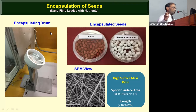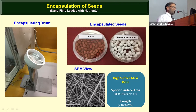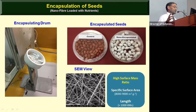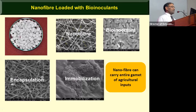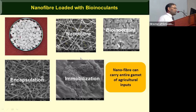The beauty of nano-fiber technology is that one gram of nano-fiber has a surface area of roughly 10,000 square meters — equivalent to one hectare of land loaded onto a seed. In terms of length, the fiber from one gram could connect Coimbatore to Delhi, about 2,000 kilometers. We use this for nutrient delivery and bio-inoculants so that the entire crop input goes in at once, and the farmer does not need to visit the field for inputs anymore.